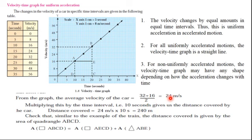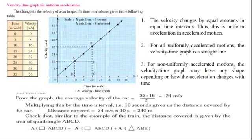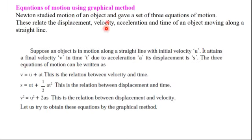So the distance covered by the car in 10 seconds at 24 meters per second is 240 meters. Similarly, for the train example, the distance covered is given by the area of triangle ABC. These two are very important points: the velocity-time graph for uniform velocity and for uniform acceleration. Our next point will be equations of motion using the graphical method.